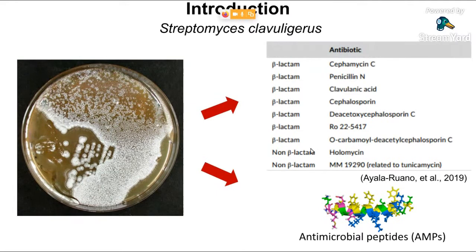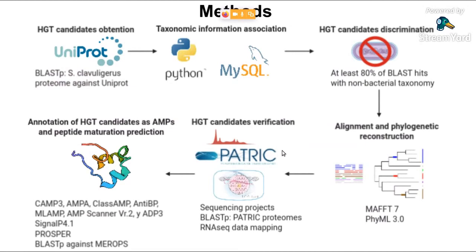In our project, we studied Streptomyces clavuligerus, a gram-positive bacterium that is a high producer of secondary metabolites with industrial applications. As we can see in this table, this bacteria can produce a lot of antibiotics, and also antimicrobial peptides, or AMPs, which are small molecules that protect a host against bacterial, yeast, fungal, and viral infection. It is known that this bacteria contains three shared plasmids and one megaplasmid that could provide a vehicle for genetic interchange by horizontal gene transfer. The aim of this research was finding HGT events in Streptomyces clavuligerus.